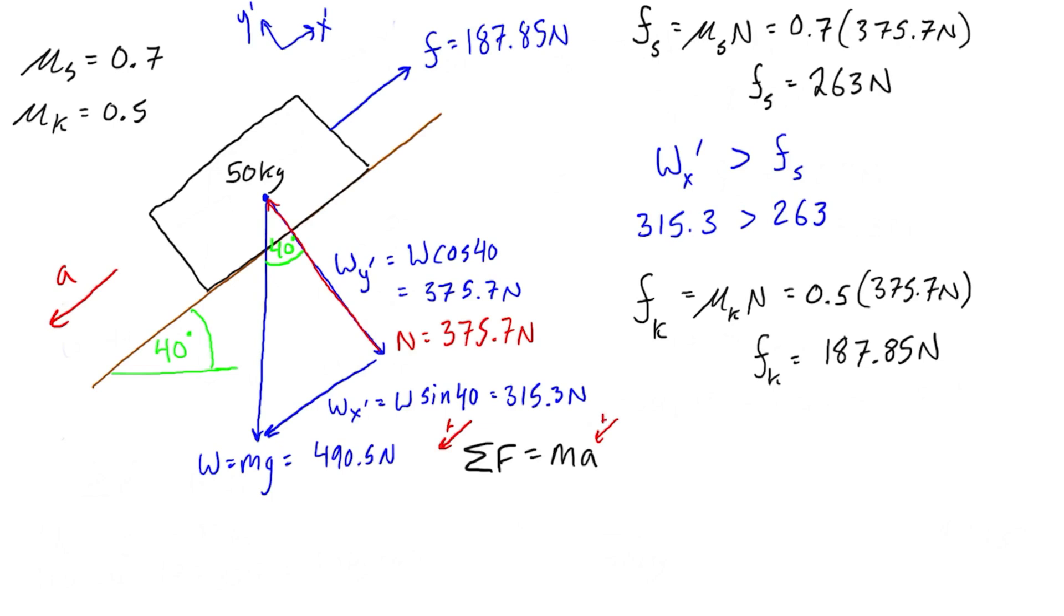So let's take Wx prime as positive. So we'll have the sum of forces: we have Wx prime, and then we're going to subtract the kinetic friction, and that's going to equal mass times acceleration. We can plug in the numbers, so we have 315.3 newtons minus 187.85 newtons is going to be equal to the mass, which was 50 kilograms, times the unknown acceleration.